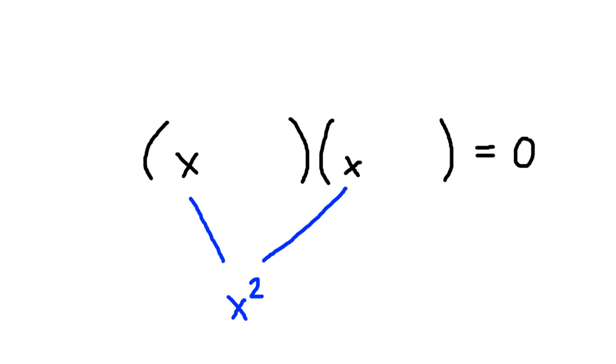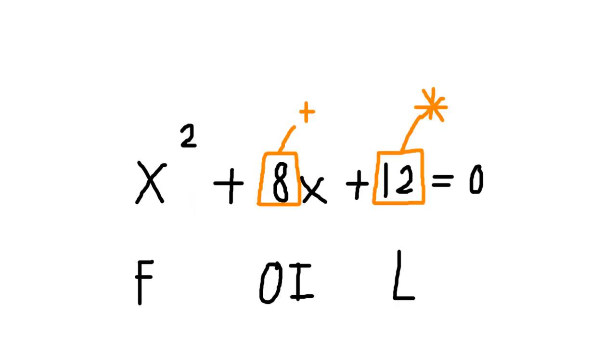First, we place the x's in the first position, since x squared is just two x's multiplied together. Then, we fill in the other two spots by answering the following question.